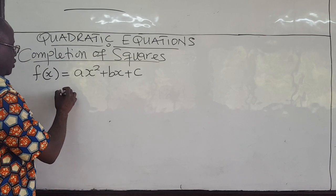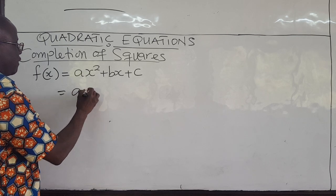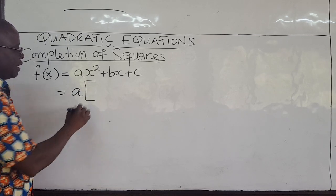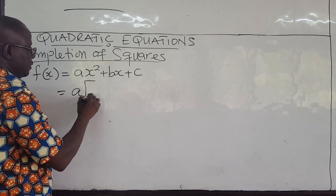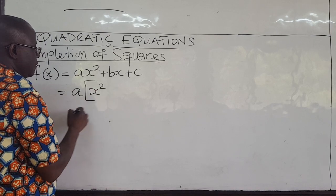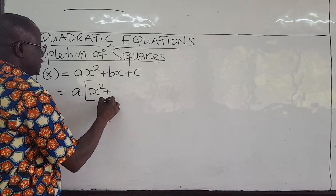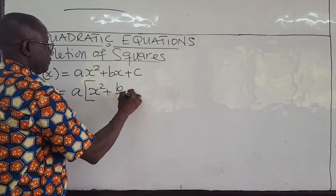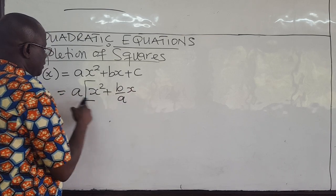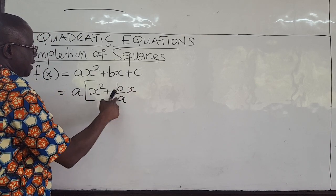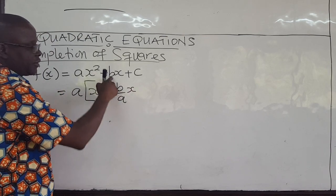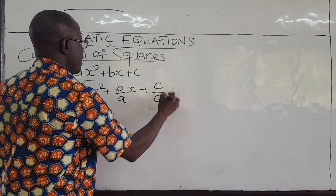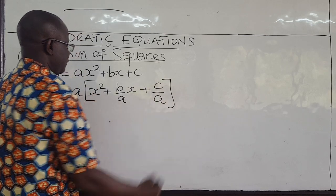What you do is pull 'a' out of this, and then you're going to have x squared plus b over a times x, plus c over a. Where you multiply this out, then you get this. Once it's of this form, then you can complete the square.